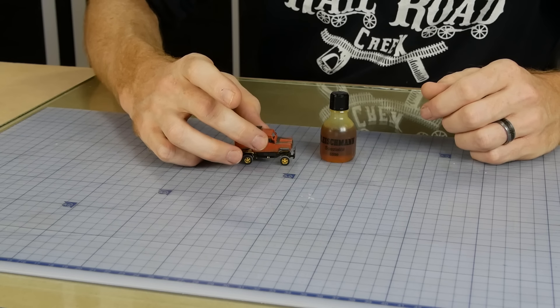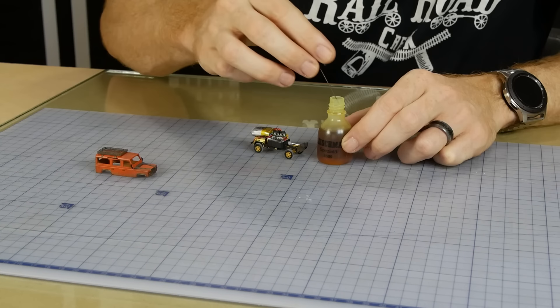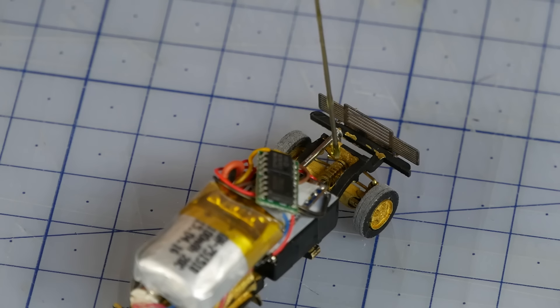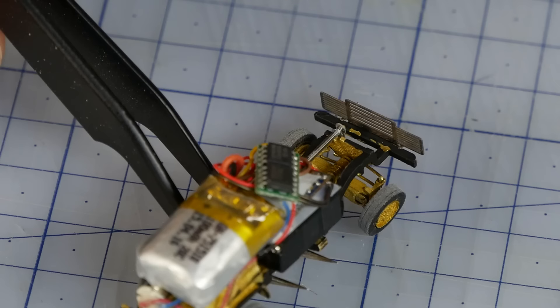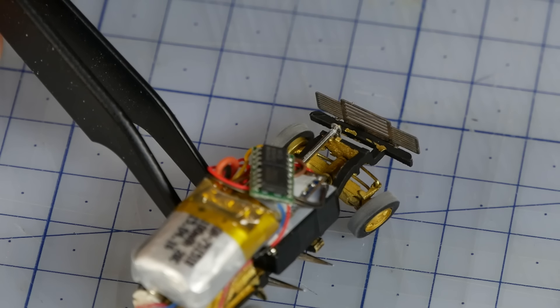To keep the model running smoothly, I lubricate the gears with some model train lubricant. It will only need the smallest of drops on each of the gears, but you'll notice it runs much nicer once the gears have been oiled.